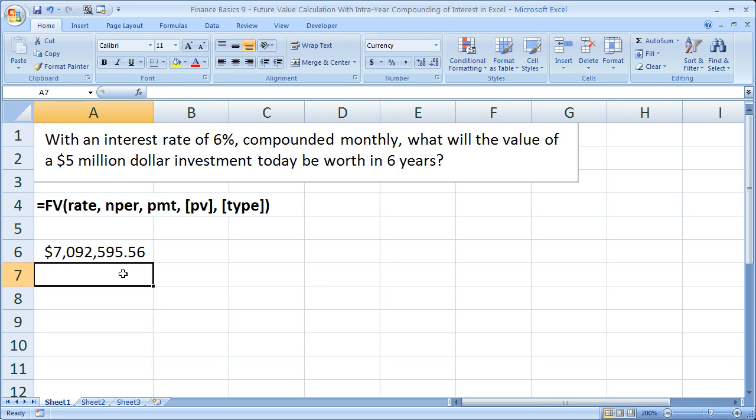So equals FV, open parenthesis, our rate is now 0.005, comma.